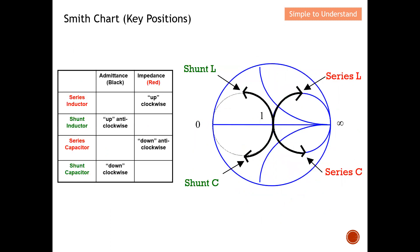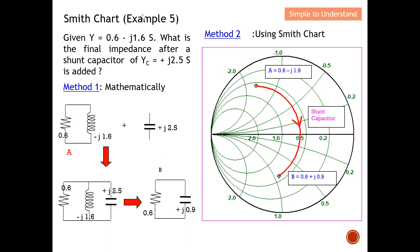Let's do another example to understand better. Again, I'm given the admittance, and the approach is similar to Example 4. This time I'm adding a shunt capacitor with admittance value of plus j2.5. For a capacitor on the admittance chart, it has a plus j characteristic. Mathematically, with admittance in this form, the components are connected in parallel: 0.6 minus j1.6, with a shunt capacitor of plus j2.5 added.